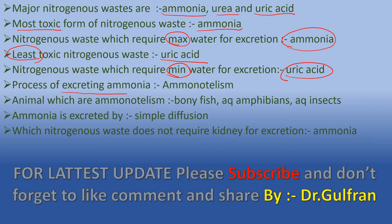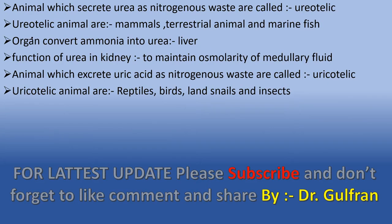The nitrogenous waste which requires the minimum amount of water for excretion is uric acid. The process of excreting ammonia is ammonotelism, and the animals which are ammonotelic are bony fish, aquatic amphibians, and aquatic insects. Ammonia is excreted by simple diffusion, and it does not require the kidney for its excretion.